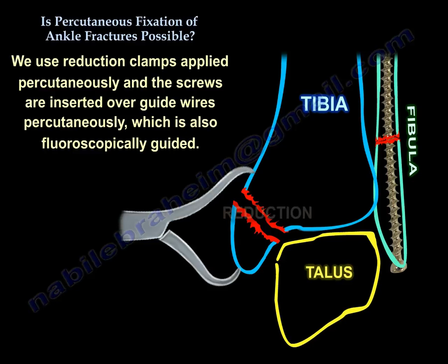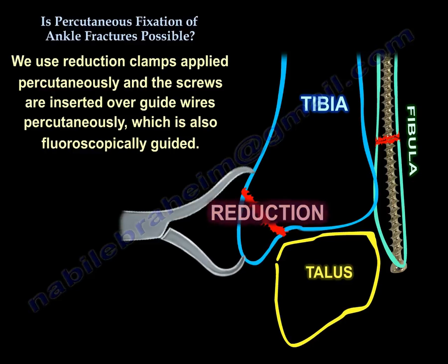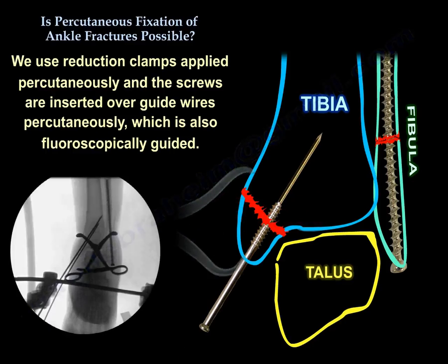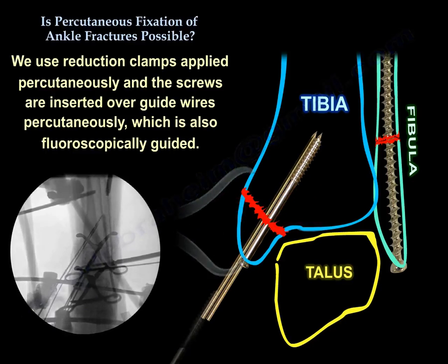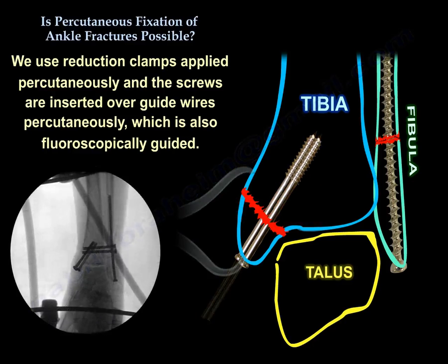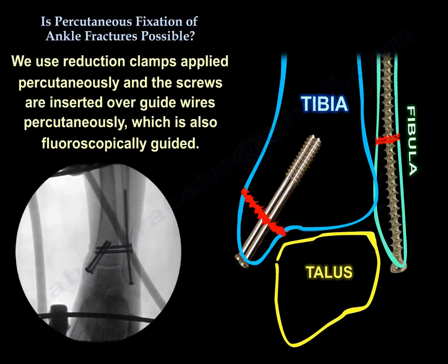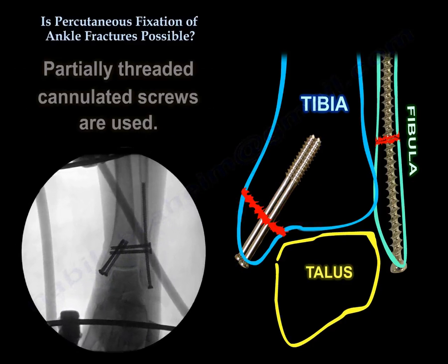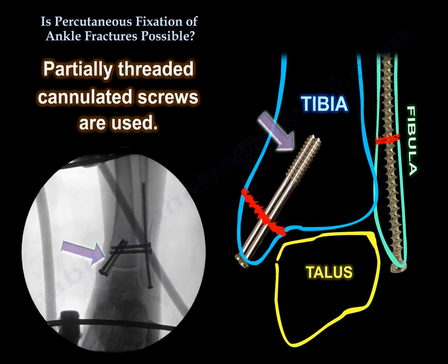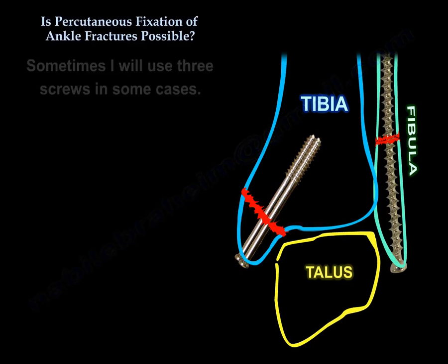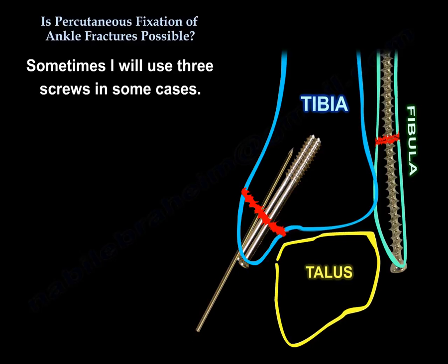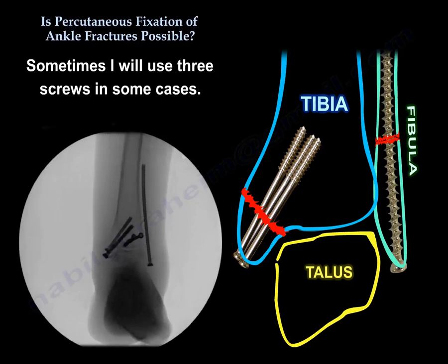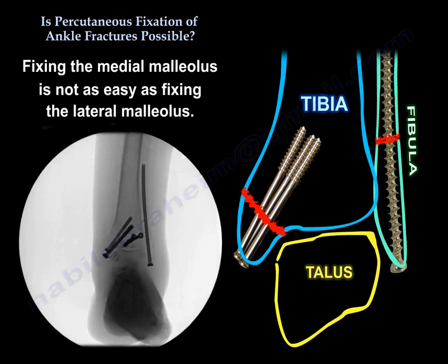After fixing the lateral malleolus, we attempt to fix the medial malleolus. A reduction clamp is applied percutaneously and screws are inserted over a guide wire percutaneously under fluoroscopic guidance. Partially threaded cannulated screws are used, and sometimes I use three screws in some cases.